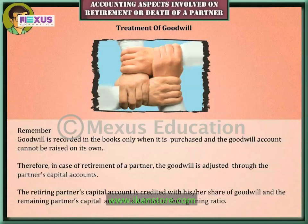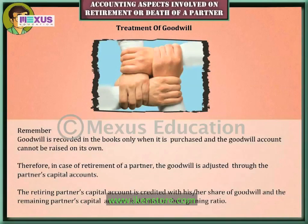Since the goodwill account cannot be raised on its own, in the case of retirement of a partner, goodwill is adjusted through the partners' capital accounts. The retiring partner's capital account is credited with his or her share of goodwill, and the remaining partners' capital accounts are debited in their gaining ratio.